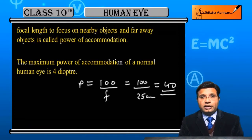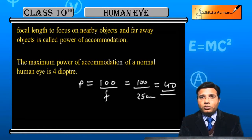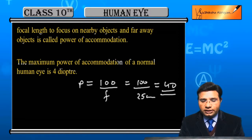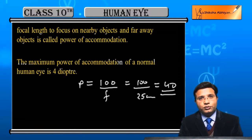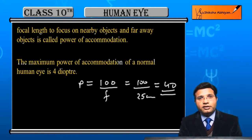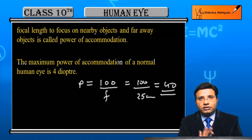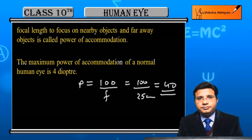ये maximum value है — maximum value of power of accommodation for a normal human eye। ये solve करके दिखाना आपको जरूरी नहीं है, इस पर आप as a value की तरह भी answer कर सकते हो कि 4 diopter है। 4 diopter आया कैसे — 100 upon F में F की value 25 cm है, और 25 cm है near point।